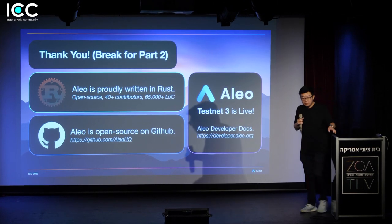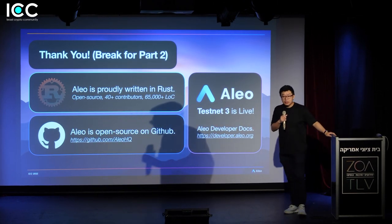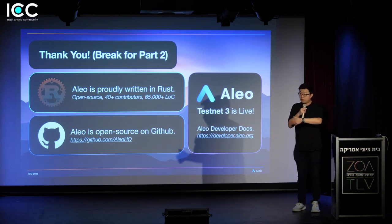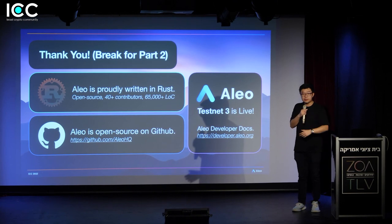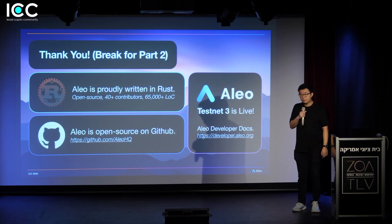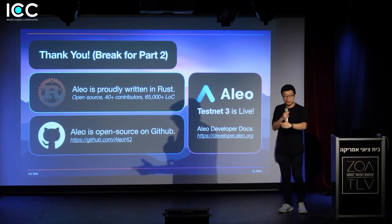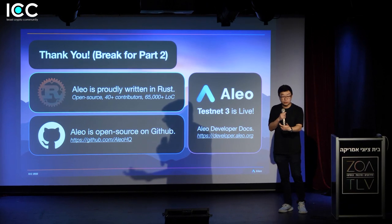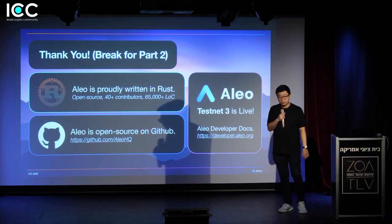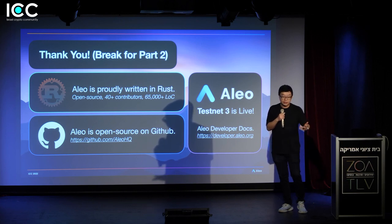How decentralized is Aleo? Aleo itself is a proof-of-stake based system, a BFT based system. Anyone can be a validator, anyone can run a client, anyone can run a full node. From that perspective, it's fairly decentralized in the sense that it's permissionless and open. However, because it's a BFT system, block producers can only be a very small number — a few hundred nodes. This is true of any proof-of-stake based system. We are no different from existing L1s that are decentralized.